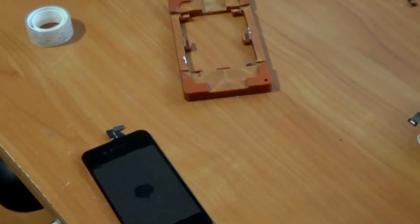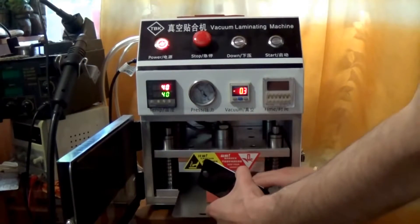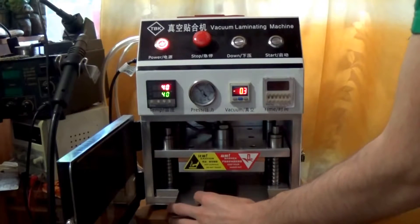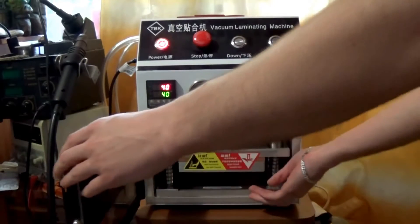Now put this mold into the machine on rubber lining and we can run the machine.